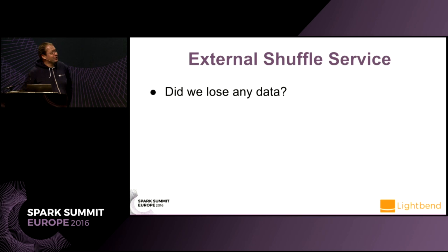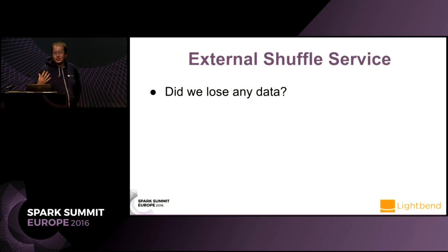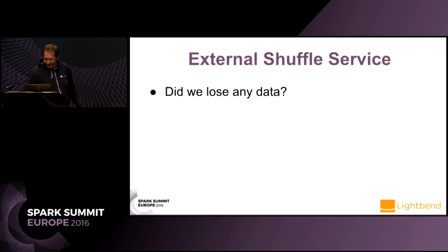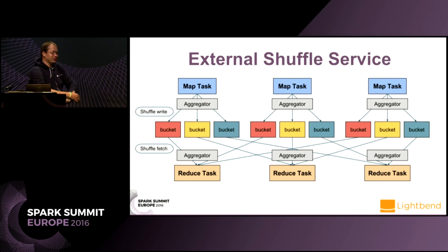Did we lose any data? If running without the external shuffle service, we will lose some data — an executor is killed and the data on it was something we needed later. We could recreate the data using the full RDD computation graph, but that increases cost rather than reducing it. To be able to manage this, we need to look at the external shuffle service. To understand it, we first need to speak about shuffling itself.